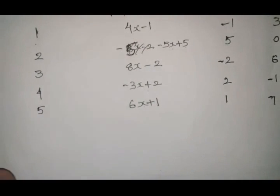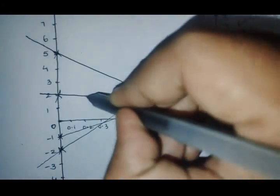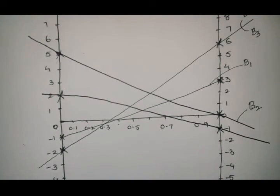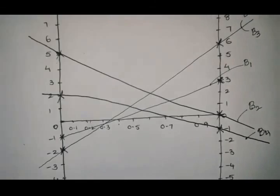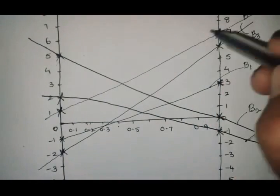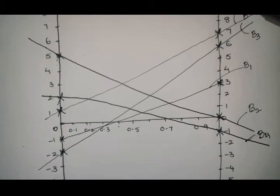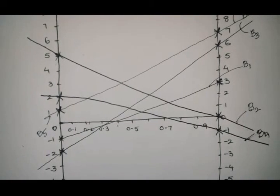For alternative 4: plot 2 on x=0 and -1 on x=1, draw line B4. For alternative 5: plot 1 on x=0 and 7 on x=1, draw line B5. All five alternative lines are now represented on the graph.